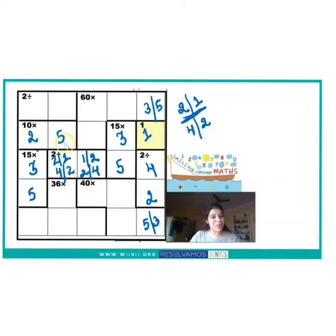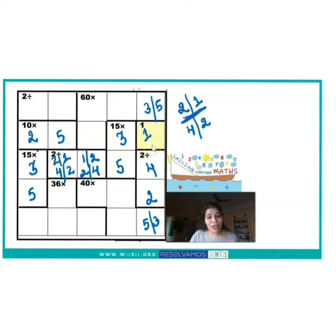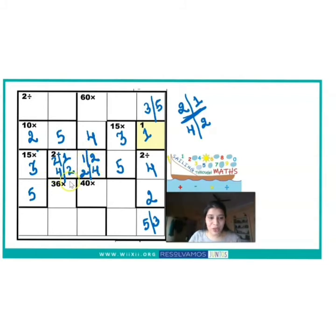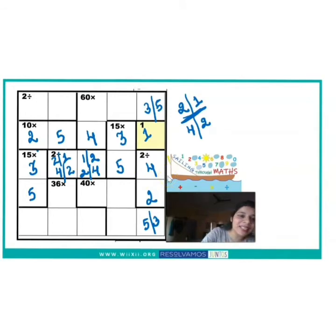Now if I look at the second row, 2, 5, 3, and 1 are already used. So the only remaining number is 4. Let me write 4 here. This is how we have obtained all numbers for the second row. Now looking at this ÷2 cage in the third row, 4÷2 or 2÷4 cannot be used because 4 is already in this row. So the only valid combination for these two blocks is 2÷1 or 1÷2.